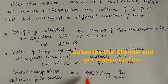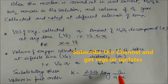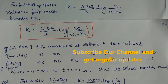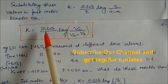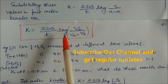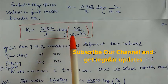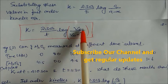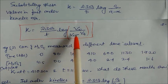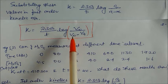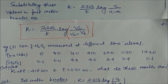Substituting these values into the first order kinetics equation — k = 2.303/t × log(a/(a−x)) — we get k = (2.303/t) × log(V∞ / (V∞ − Vt)), where V∞ is the initial amount and V∞ − Vt corresponds to the amount remaining at time t.